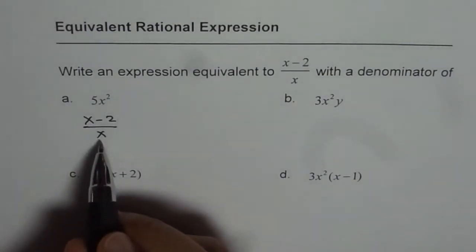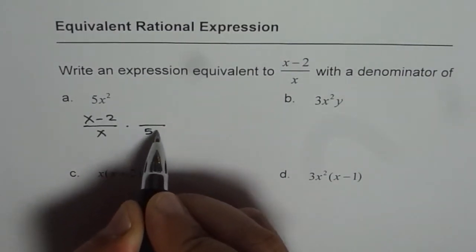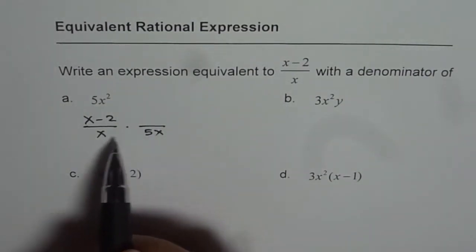Well, to get 5x squared in the denominator, I should multiply the denominator by 5x. Right? If I multiply the denominator by 5x, I am going to change the expression.